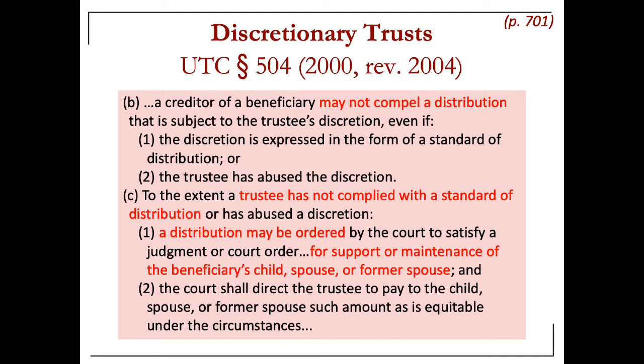The UTC differs from traditional law because there is no exception for creditors providing basic necessities — suppliers of necessities cannot reach discretionary trusts under the UTC even if they are support trusts. Under the UTC, the rules that apply to support trusts and pure discretionary trusts as far as creditors go have been combined.